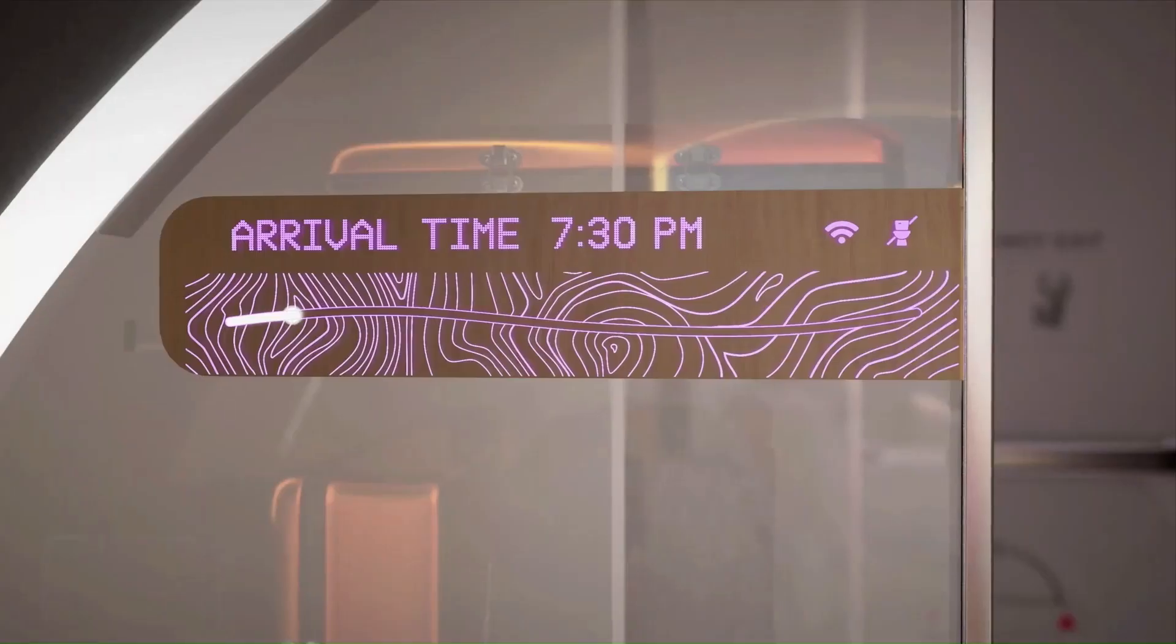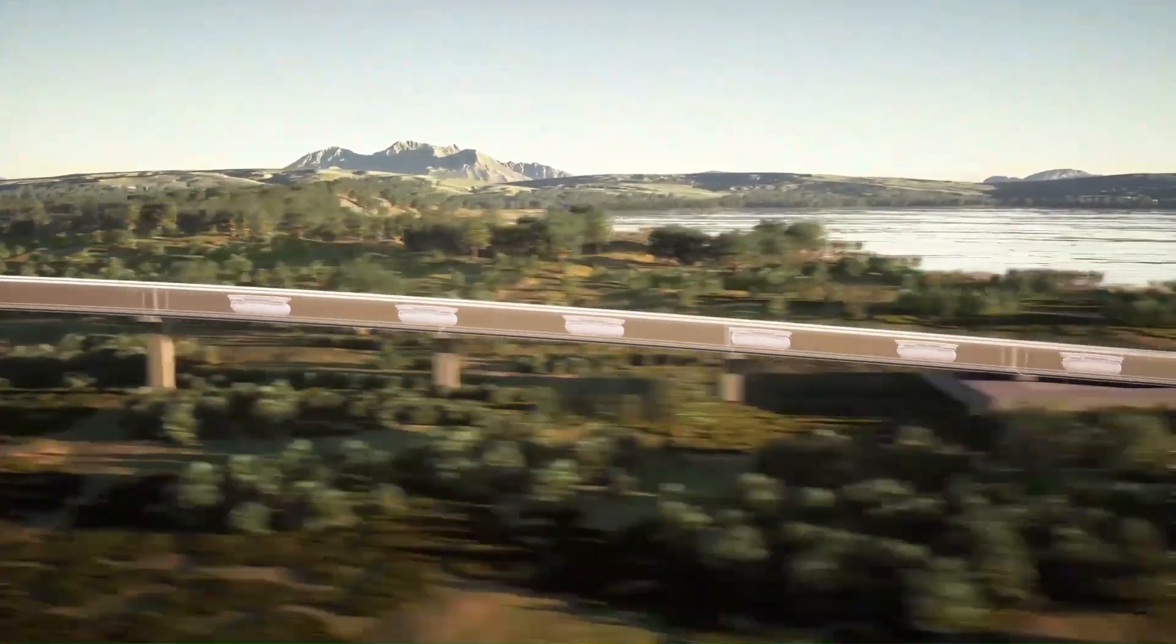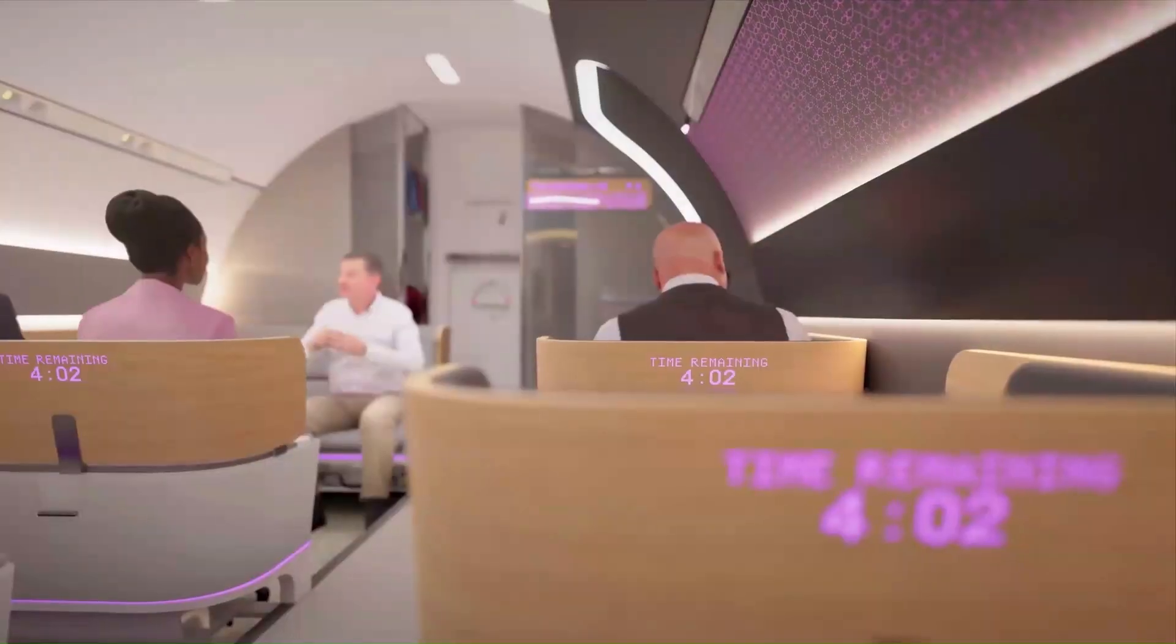The original Hyperloop concept proposed to use a linear electric motor to accelerate and decelerate an air-bearing levitated pod through a low-pressure tube.